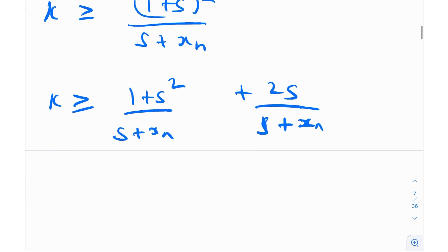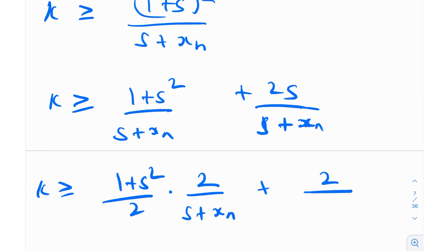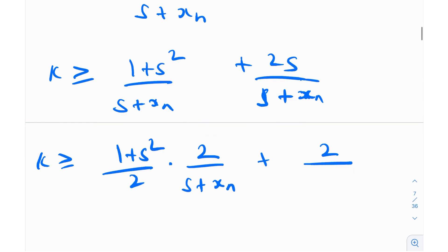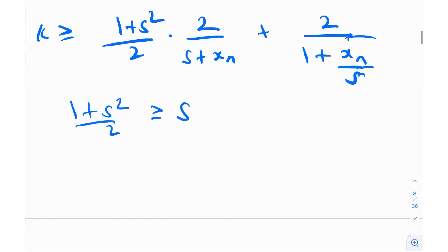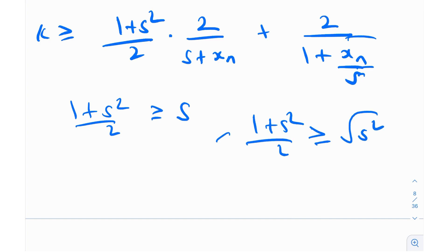Now I'm going to write this in a different way. I'll divide and multiply by 2, and also divide both numerator and denominator by s, so this becomes 1 + xn/s. I know that (1 + s²) / 2 is greater than or equal to s by AM-GM inequality, since (1 + s²)/2 ≥ √(s²) = s.